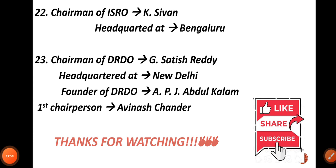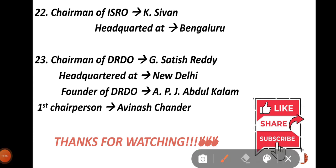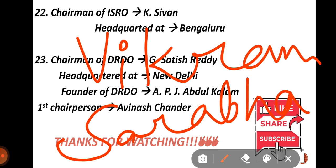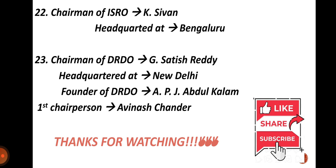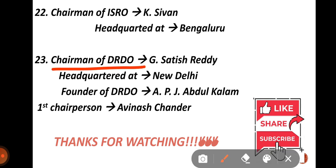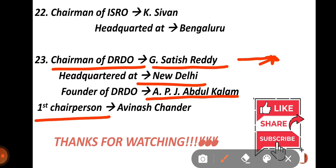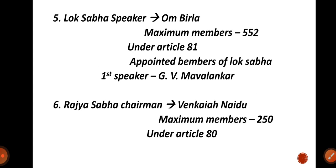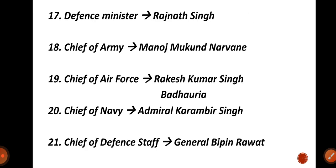The first Chairman of ISRO was Vikram Sarabhai — very important. Then, the Chairman of DRDO — DRDO stands for Defense Research and Development Organization — is G. Satish Reddy, and its headquarters is in New Delhi. The founder of DRDO is APJ Abdul Kalam, and the first Chairperson of DRDO was Avinash Chander.